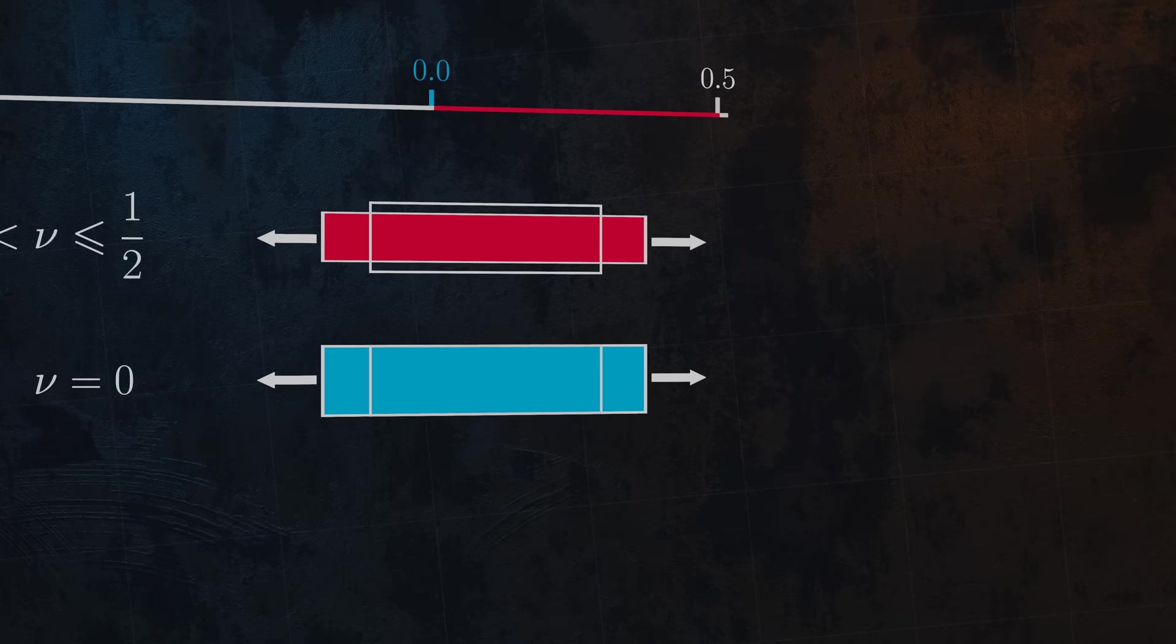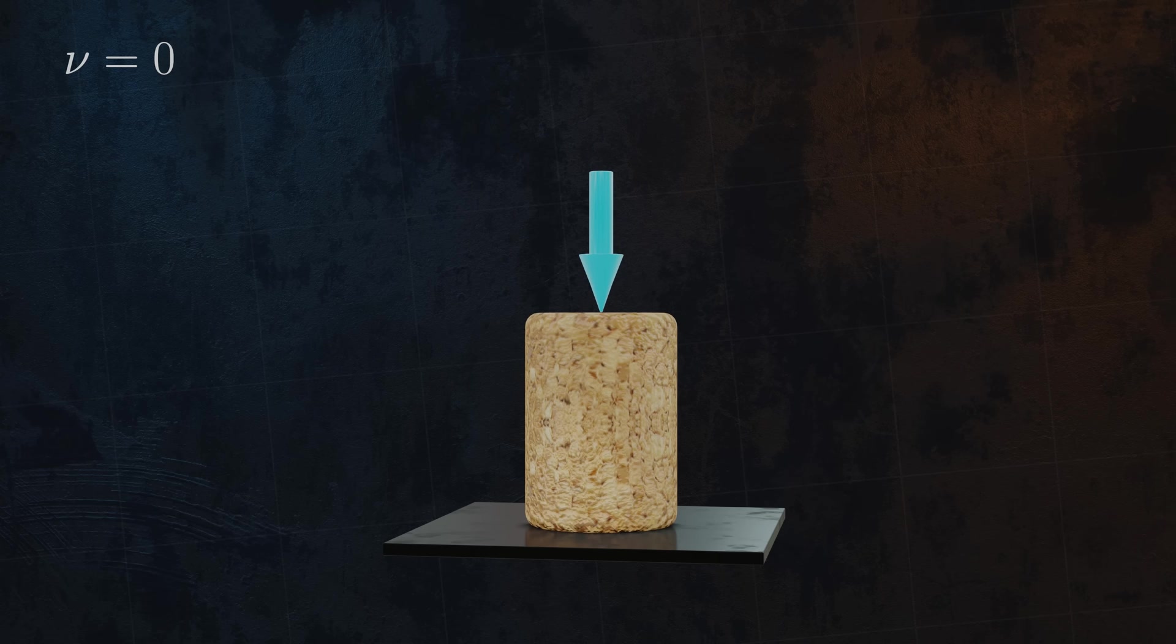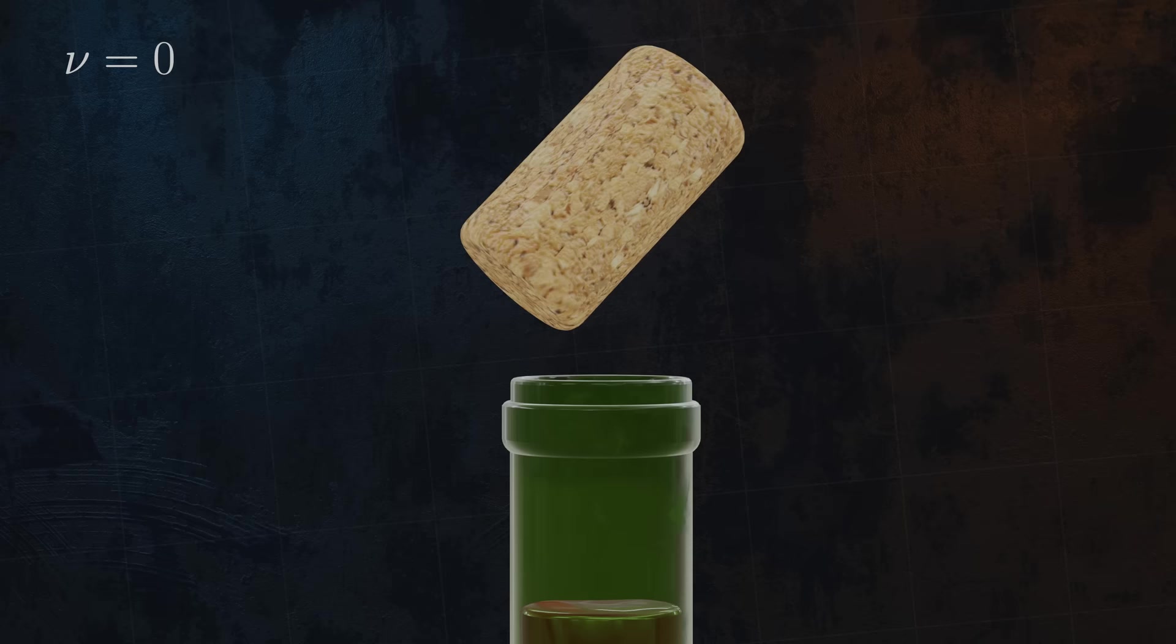A great example is the cork in a bottle of wine. Because it doesn't expand laterally when compressed, as you can see here, it can easily be inserted into the neck of a bottle. A material with a larger Poisson's ratio would be much more difficult to insert, as it would expand in the lateral directions when compressed.